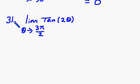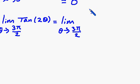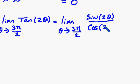Number 31, we're taking the limit of tan(2θ) as θ approaches 3π/2. What I like to do is convert things to sine and cosine. So we've got θ approaching 3π/2, and this becomes sine of 2θ over cosine of 2θ.